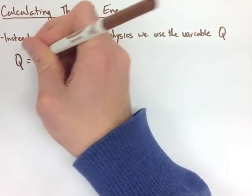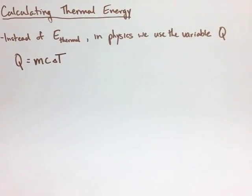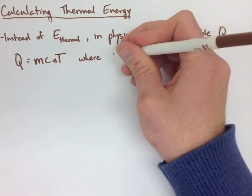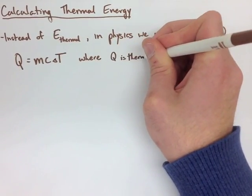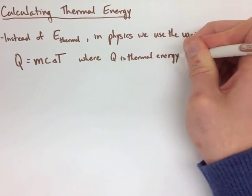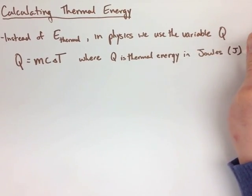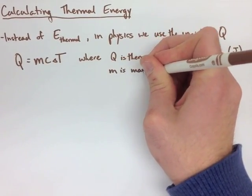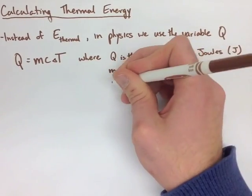It's a capital Q for thermal energy. So Q equals MC delta T, where Q is the thermal energy in joules, M is mass like it always is and it's measured in kilograms, and delta T is the change in temperature in degrees Celsius.